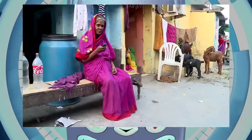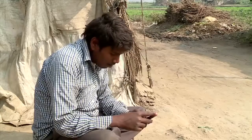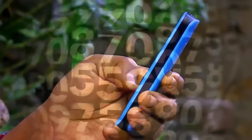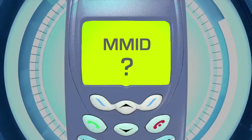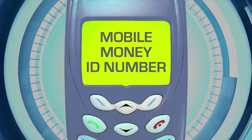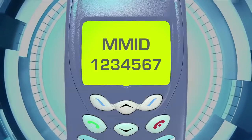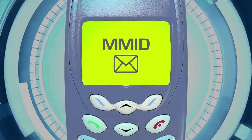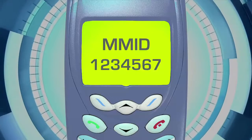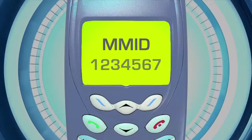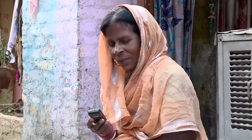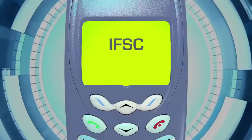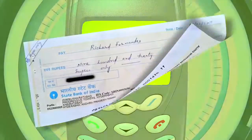IMPS stands for Immediate Payment System. This is an electronic fund transfer service that can be availed with the help of a mobile phone. What is MM ID? MM ID means Mobile Money Identification Number — it is a seven-digit number. All mobile banking or SMS banking provides active customers a seven-digit MM ID, which is sent to their mobile phones via SMS.